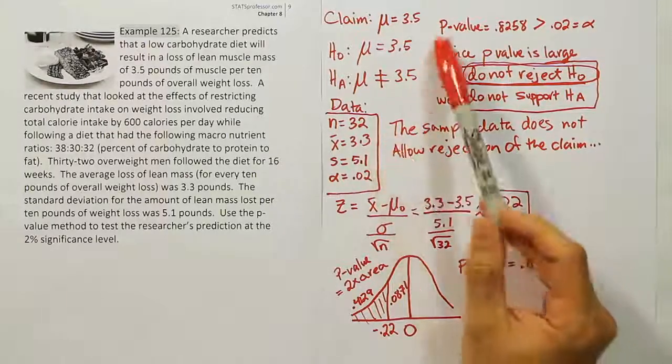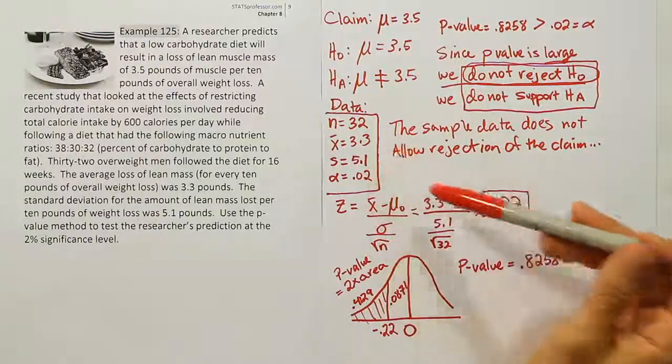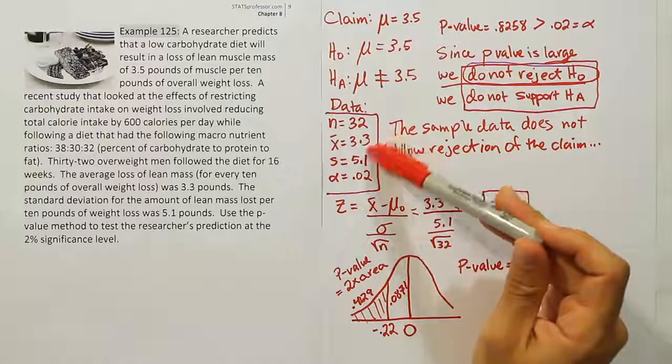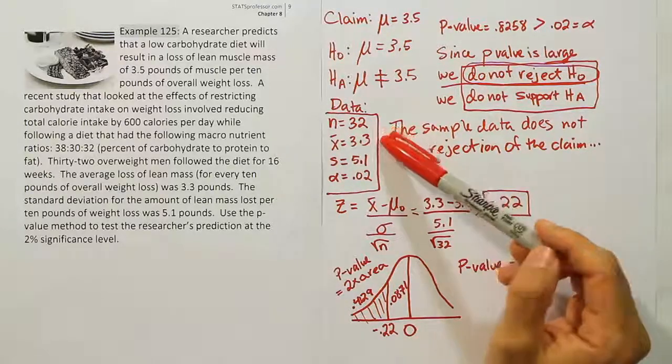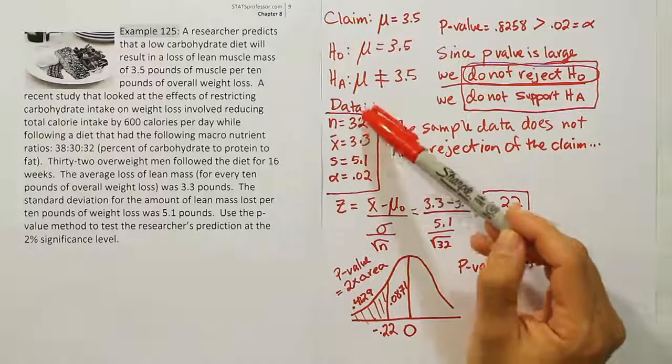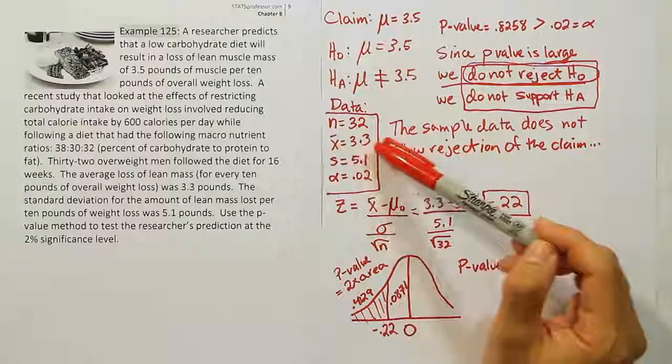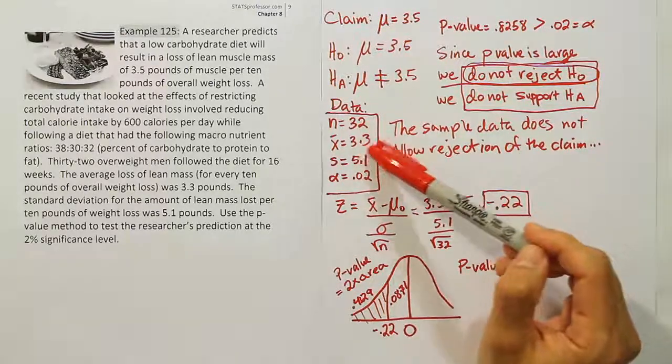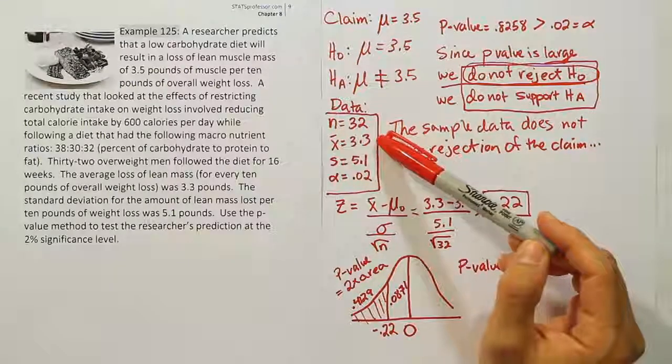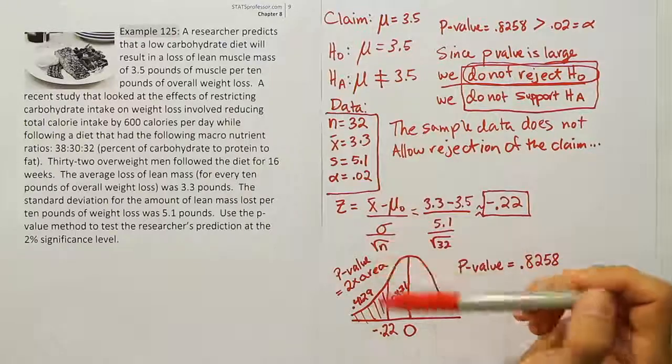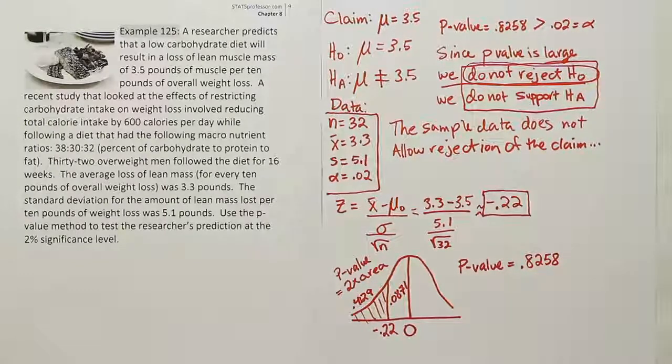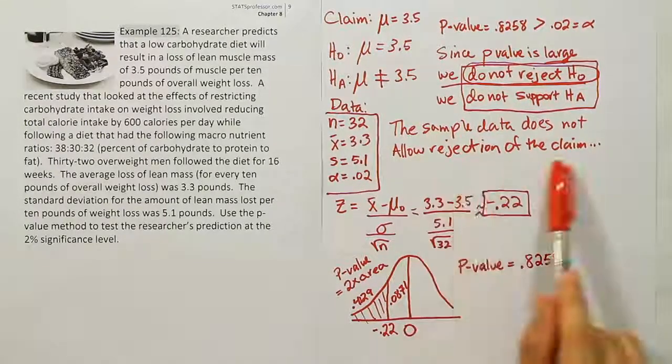It's not exactly his number, but it's close enough that we can't say he's wrong. This could have happened just by random statistical fluctuation. Sample data is always going to be a little different than population data. It's not far enough away from 3.5 for us to conclude that the researcher is wrong. The sample data does not allow rejection of the claim.